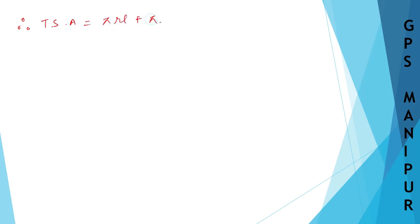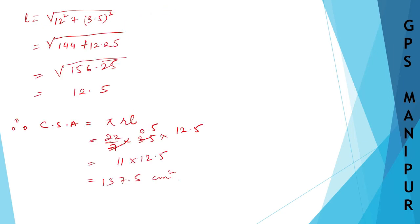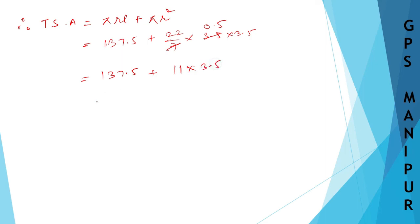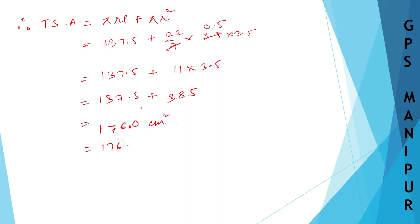Now, total surface area = π×r×l + π×r². We already know π×r×l = 137.5. For π×r²: (22/7) × 3.5 × 3.5 = 11 × 3.5 = 38.5. So total surface area = 137.5 + 38.5 = 176 meter square.